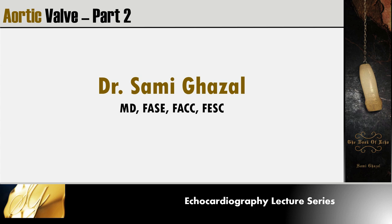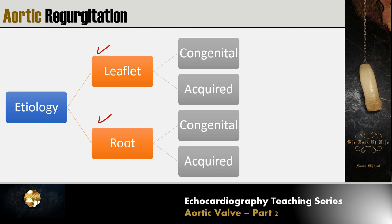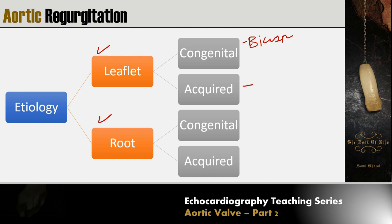Starting with the etiology, which can be either leaflet abnormalities or aortic root abnormalities, each further subdivided into congenital or acquired. In congenital leaflet abnormalities, we have abnormal numbers of the leaflets, like bicuspid, unicuspid, or quadricuspid. In acquired, we have inflammation like rheumatic valve disease, infective endocarditis, or even senile degeneration.